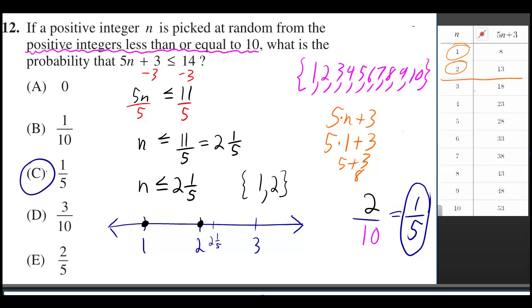There would have been a quicker way of doing that as opposed to having to make a table like this. If 5n + 3 ≤ 14 and I subtract 3 from both sides, that won't change the answer. So 5n ≤ 11. I divide both sides by 5 and get n ≤ 11/5.